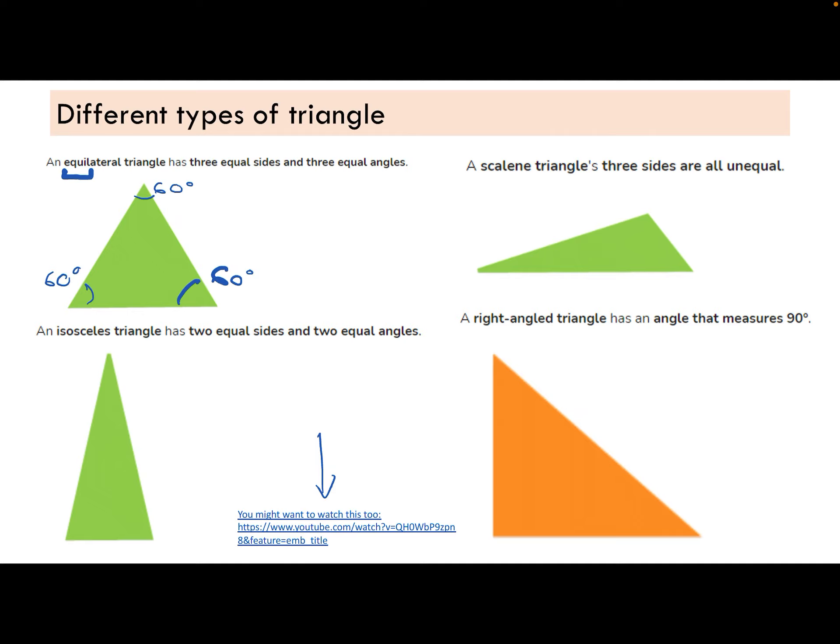We have a scalene triangle. All three sides are unequal. I always think about this one as not to scale. Scalene not to scale. So A, B and C are all different lengths.